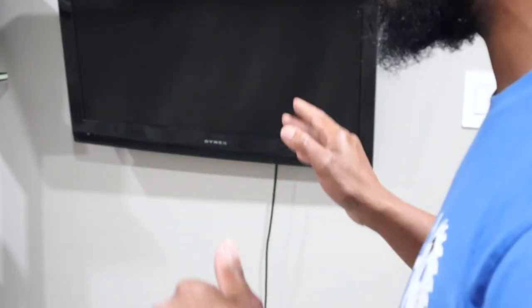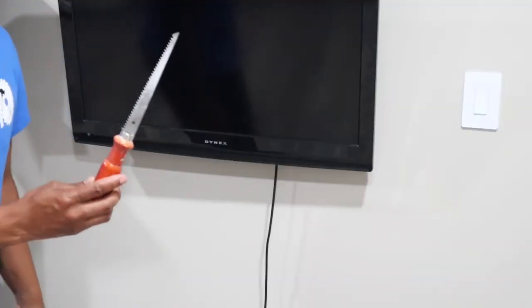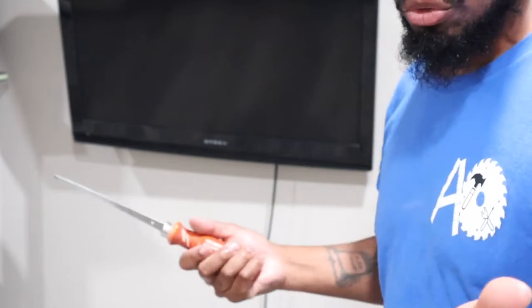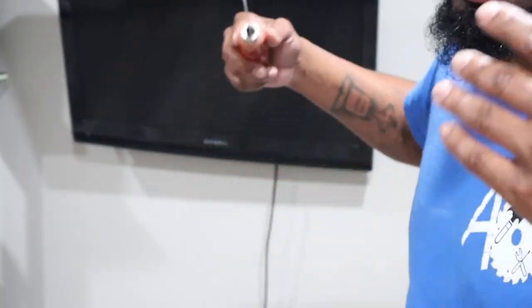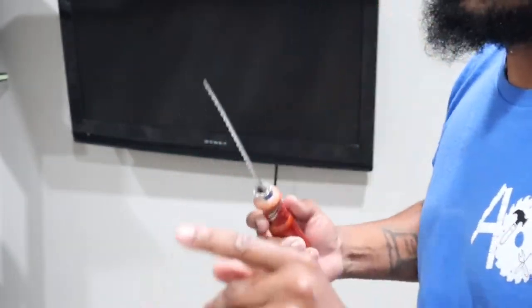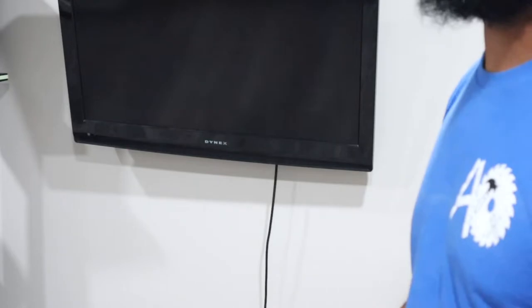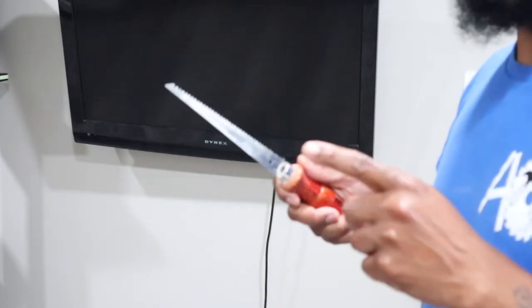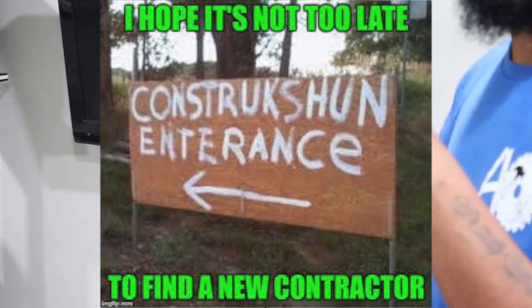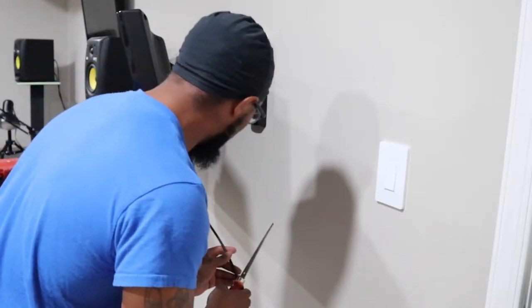So when you're doing this, you want to determine where you want to put this because you will need a drywall saw. That's basically it for now. Of course you will need a screwdriver. Once you put the hole in the wall, that's it. If you're not into doing drywall patching up, make sure that you're doing this right the first time. If you do it wrong, you will have to hire somebody to patch the hole.